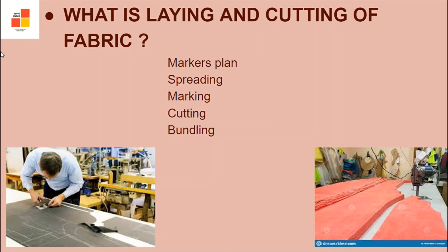Next is marking, where patterns are traced with the help of markers. Cutting involves layers being cut smoothly using machines like a straight knife, round knife, or band knife. The height of lay is dependent on the cutting apparatus. The straight knife machine is the cheapest of all cutting apparatus. Last is bundling — cut pieces are bundled for stitching, embroidery, or printing.